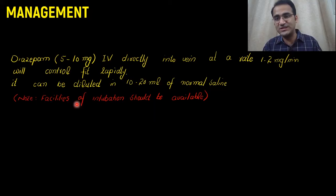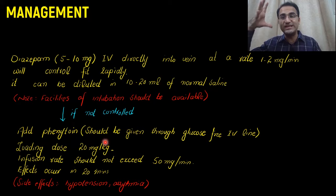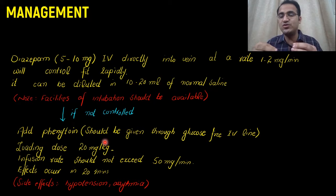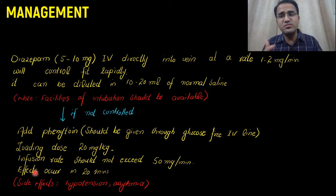If the seizure is still not controlled after giving benzodiazepines, you need to give phenytoin. Remember, do not give phenytoin into the dextrose IV line, because phenytoin precipitates in glucose solution — it should be given through a glucose-free IV line. The loading dose of phenytoin is 20 mg per kg, and the infusion rate should not exceed 50 mg per minute. Effects of phenytoin will be visible within 20 minutes. Side effects include hypotension and arrhythmia.